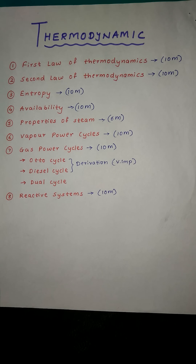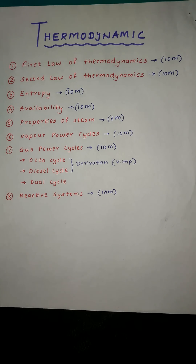Chapter number seven: Properties of Steam — one numerical for 6 marks, based on steam tables. It is very easy; you can do it. Chapter number eight: Vapor Power Cycle — one numerical for 10 marks, based on the Rankine cycle. It is not very easy; you can only do simple Rankine problems.